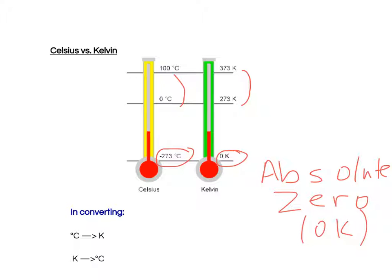But if you want to convert from degrees Celsius into Kelvin, all you're going to do is you're going to simply add 273 to your degrees Celsius value. If you want to convert from Kelvin to degrees Celsius, well, you're going to do the opposite. You're going to subtract 273 Kelvin from the Kelvin value to give you Celsius.